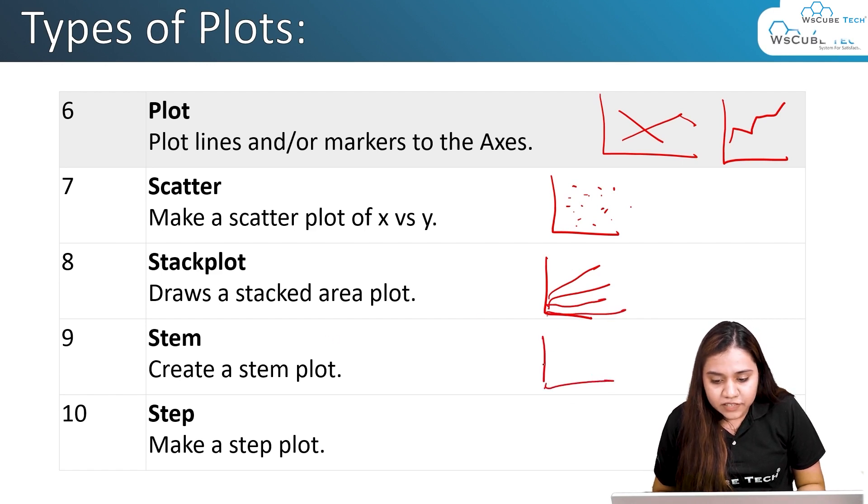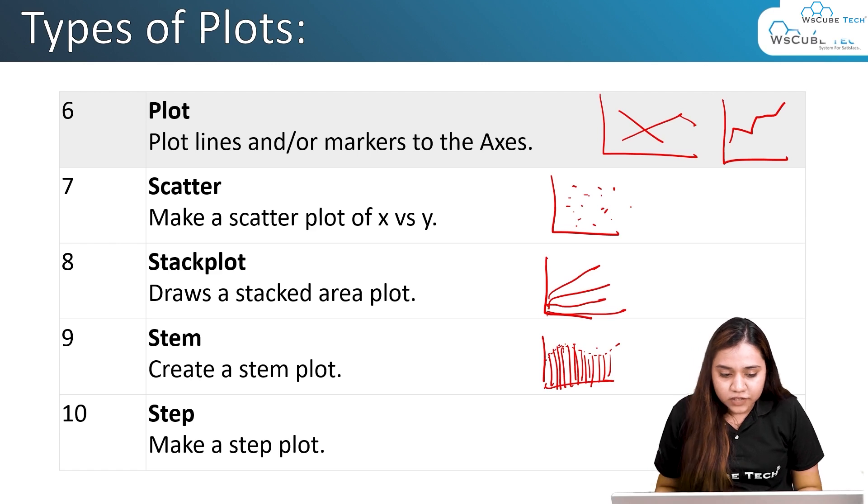Then we have stem plot. In stem plot, data looks like this—there are markers and then a straight line is connected to it. This is why it's called a stem plot. These dots are the peaks of the data, also called markers.